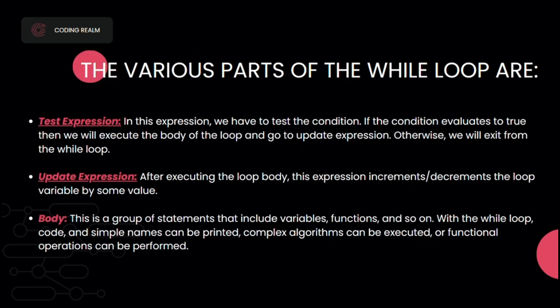The parts of the while loop in C++ are: test expression — if the condition evaluates to true, we execute the body of the loop and go to the update expression; otherwise we exit the while loop. Update expression — after executing the while loop body, this expression increments or decrements the loop variable by some value. The body is a group of statements that include variables, functions, and so on.